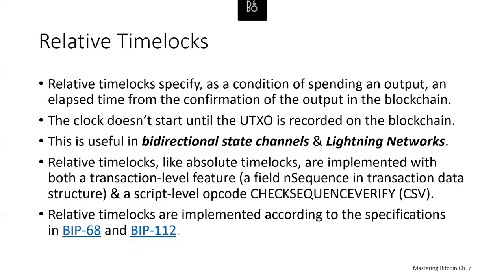Relative time locks offer greater flexibility than absolute time locks. The previous approach with nLockTime and CLTV used absolute time locks, specifying either a specific block height or specific time. Relative time lock features allow you to specify an elapsed time from the confirmation of the output in the blockchain — the clock doesn't start counting until the UTXO is recorded in the blockchain. Relative time locks are useful for chains of two or more interdependent transactions held off-chain while imposing a time constraint based on elapsed time from confirmation of a previous transaction. This is particularly useful in bidirectional state channels and lightning networks.